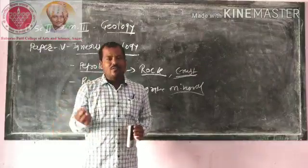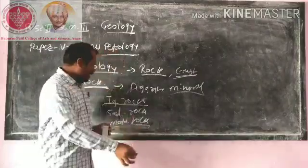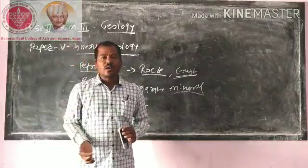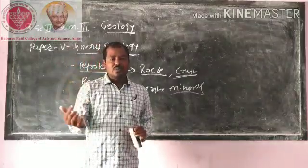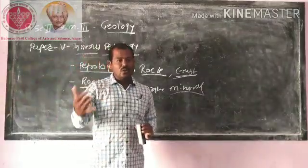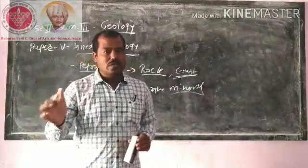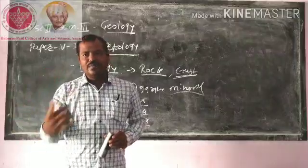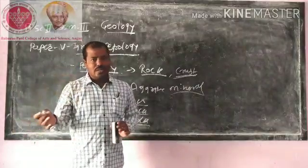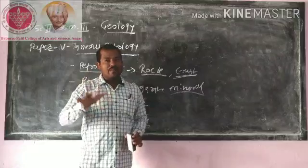That magmatic material cools and solidifies to form igneous rock. Second, sedimentary rock is formed by different sedimentary processes. A pre-existing rock is weathered, eroded, transported, deposited, and that deposition undergoes compaction and cementation. After cementation, lithification proceeds and forms the sedimentary rock under suitable temperature and pressure conditions.